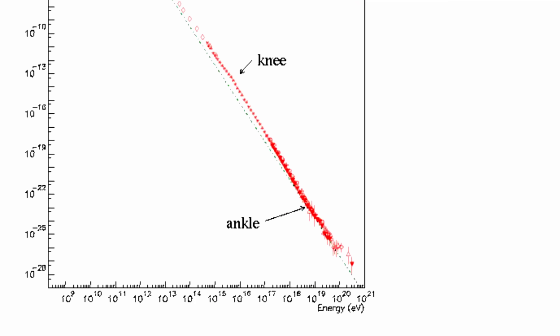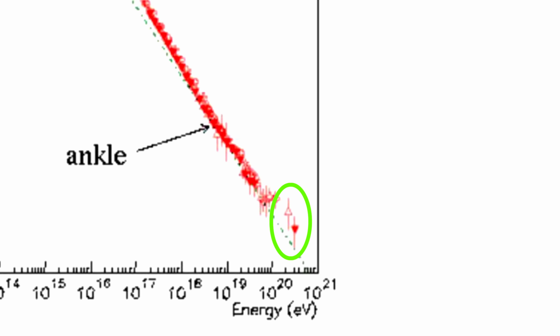Yet physicists have detected events that exceed this limit. One example is the Oh-My-God particle, with an energy of 2.8 times 10 to the 21 electron volts — around 50 joules. To put that in perspective, a bullet with such energy could kill a human, and all this energy is concentrated in a single particle. It is still a mystery what the sources of such high-energy cosmic rays are, since there are no such sources in our galaxy. The candidates are heavier elements or an incorrect measurement.